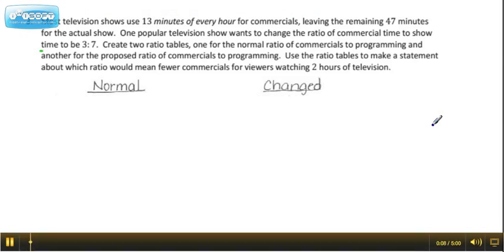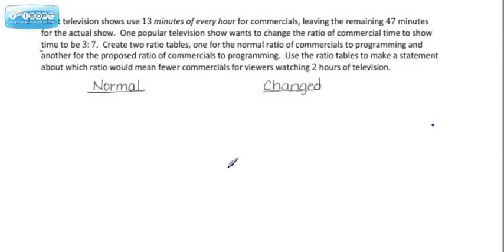Most television shows use 13 minutes of every hour for commercials, leaving the remaining 47 minutes for the actual show. One popular television show wants to change the ratio of commercial time to show time to be 3 to 7.